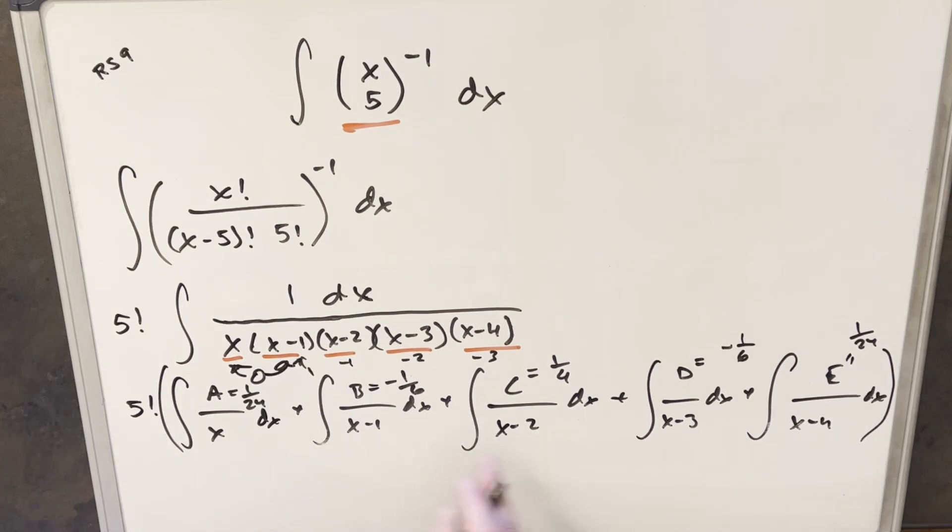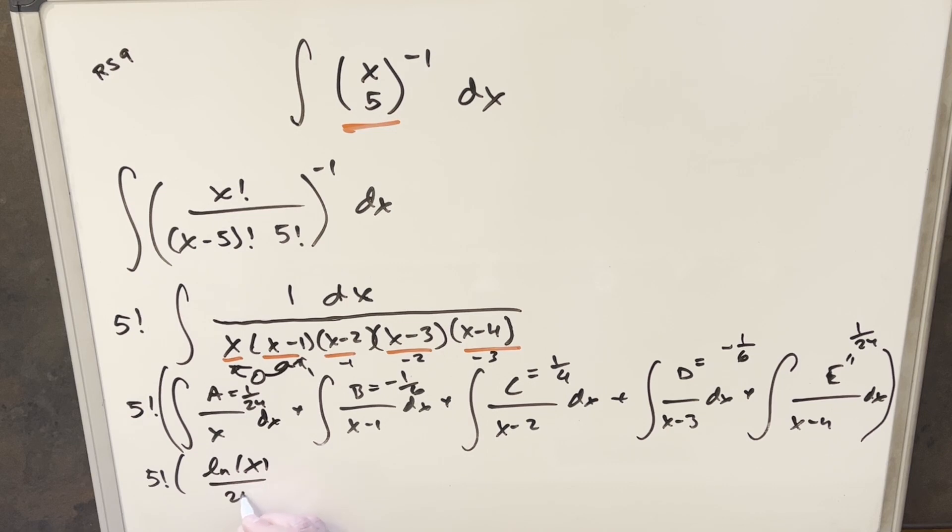But because we have linear terms in each of the denominators, it's going to be very easy to integrate. So when I do this, we're going to have our 5 factorial in front. For the first one, we'll have natural log absolute value x over 24. Then for this one, we're going to have minus natural log absolute value x minus 1 over 6. This one's going to be a plus. It's going to be over a 4. We'll have natural log absolute value x minus 2. We'll have natural log absolute value x minus 3 over a 6. And then here, natural log x minus 4 over 24.